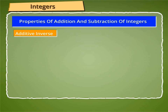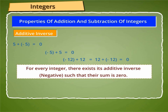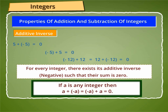Next is additive inverse. As we already know, 5 plus minus 5 is equal to 0, and minus 5 plus 5 is equal to 0. Similarly, minus 12 plus 12 is equal to 12 plus minus 12, which equals 0. From this we observe, for every integer there exists its additive inverse or negative such that their sum is 0. Hence, if A is any integer, then A plus minus A is equal to minus A plus A, which equals 0.